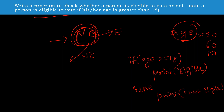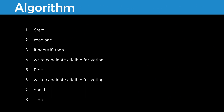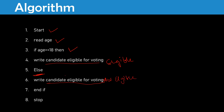As we discussed, we are using an if condition. First of all, we need to start the program. Then we need to read the age value from the computer or some data source. If age is greater than or equal to 18, print 'candidate eligible for voting'. In case the age does not meet the condition, print 'candidate not eligible for voting'. After that, end the if and stop the program. It is a very simple algorithm.